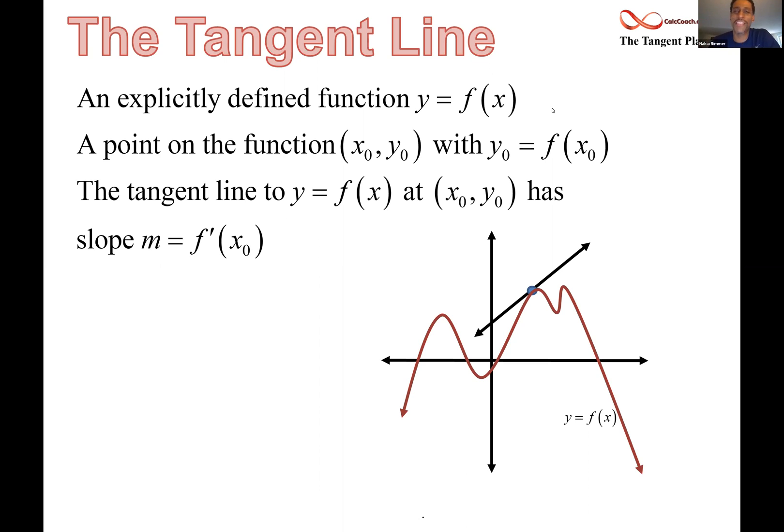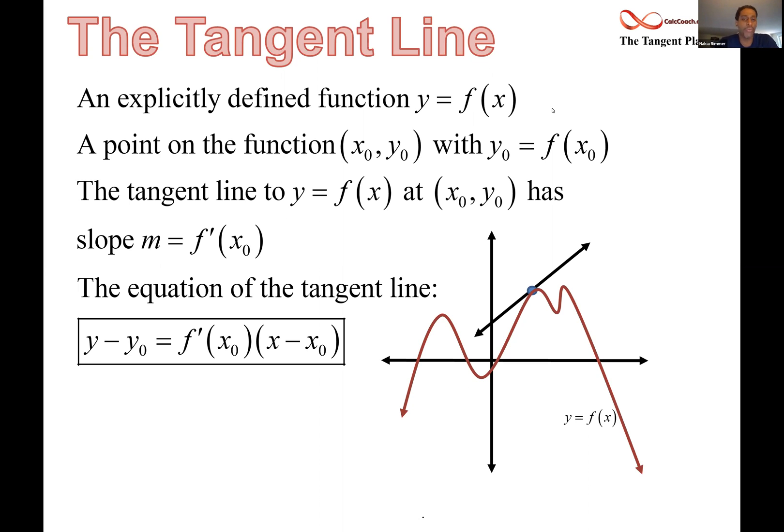If you learn nothing else in Calc 1, you learn that the slope of that tangent line is the derivative evaluated at that x naught. So your job would be to find the equation of that line that you know its slope, you know the point that it goes to. You can use point slope formula.